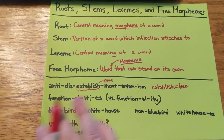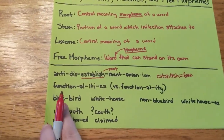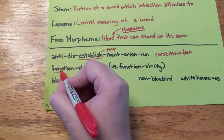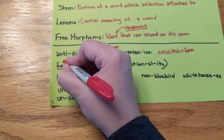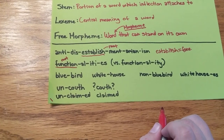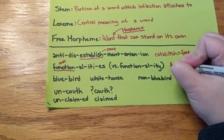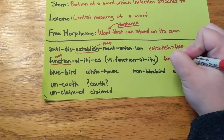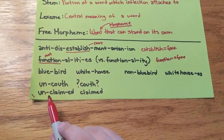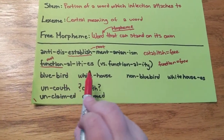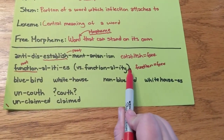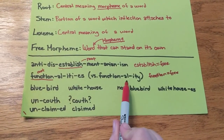Now we're going to talk about stems. In the word functionalities, where's our root? Our root is function. This root can be free — you can say the word function — whereas -al you can't say by itself, so that's a bound morpheme. You have the word functionality, which means almost the same thing as functionalities, except one is plural and the other is singular.